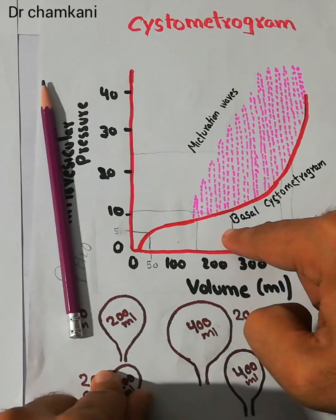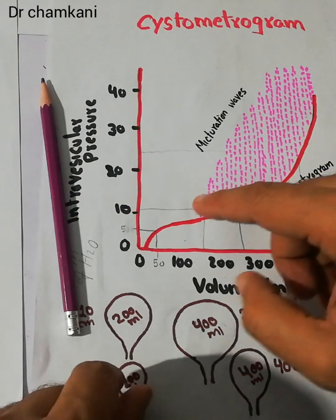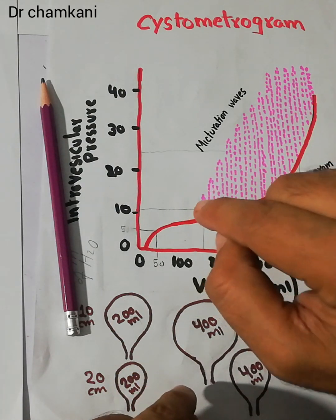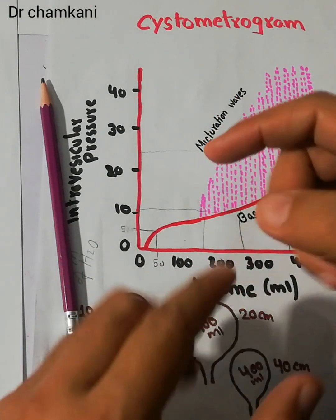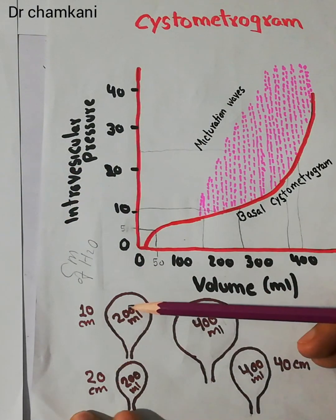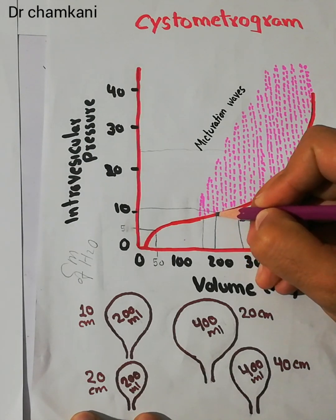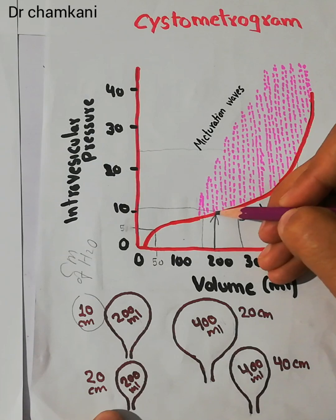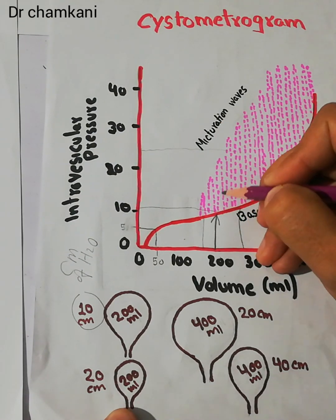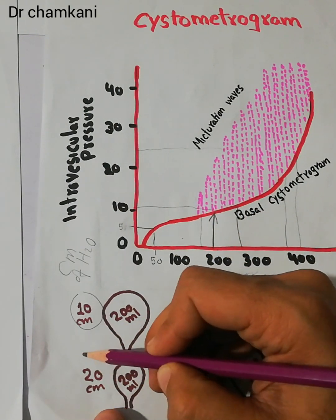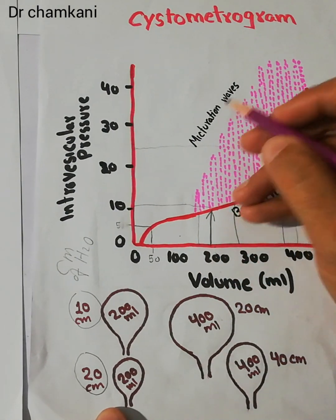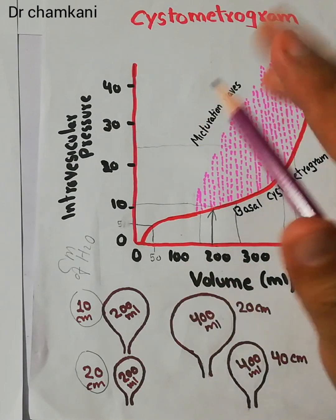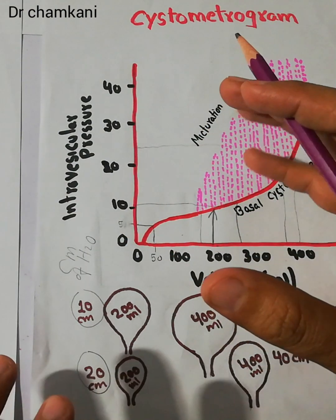The basal tone — the tension present in the wall of the urinary bladder — keeps on increasing. Initially there is not much increase, but after a certain amount of urine has accumulated, the basal tension keeps increasing. At every level of urine volume, micturation waves keep occurring. For example, a bladder containing 200 ml of urine has a basal tone of around 10 cm of water, but when a micturation wave comes, the pressure may reach up to 20 cm of water. This wave lasts for a few seconds to a few minutes then disappears, returning the pressure back to the basal level. So there are two kinds of pressure: basal pressure and micturation waves due to contraction.